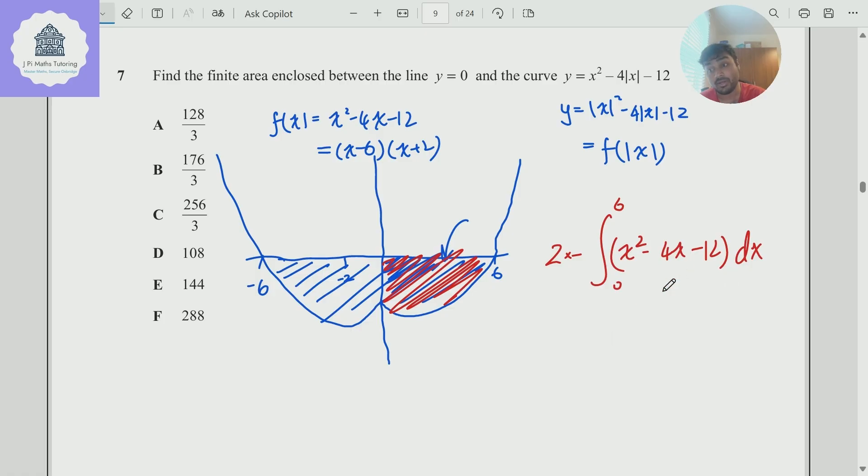You get 72 when you do it, or minus 72, and then times by minus 2, and you get 144. So the answer here is E. Thanks so much for watching. I'll catch you in the next one. Have a great day.